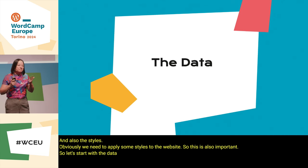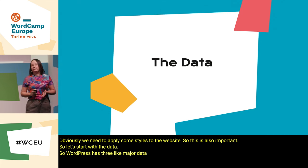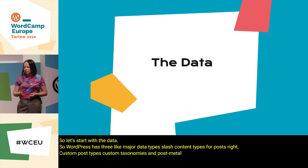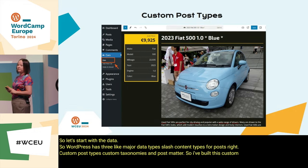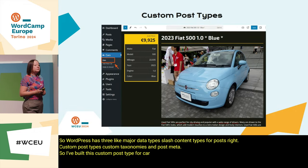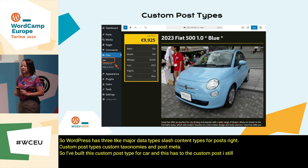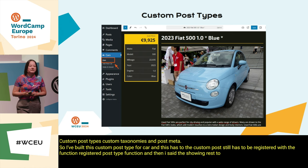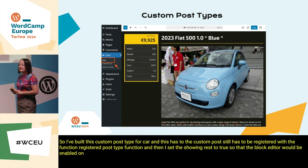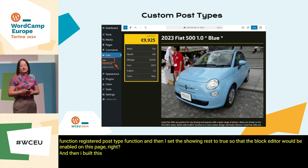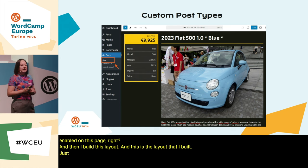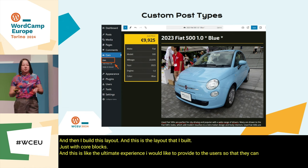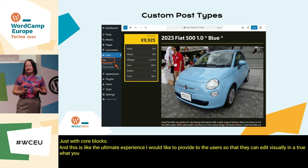WordPress has three major content types for posts: custom post types, custom taxonomies, and post meta. I built a custom post type for cars — this still has to be registered with the register_post_type function, and I set showing_rest to true so the block editor would be enabled. Then I built this layout using only core blocks — the ultimate experience I'd like to provide users: true what-you-see-is-what-you-get visual editing.